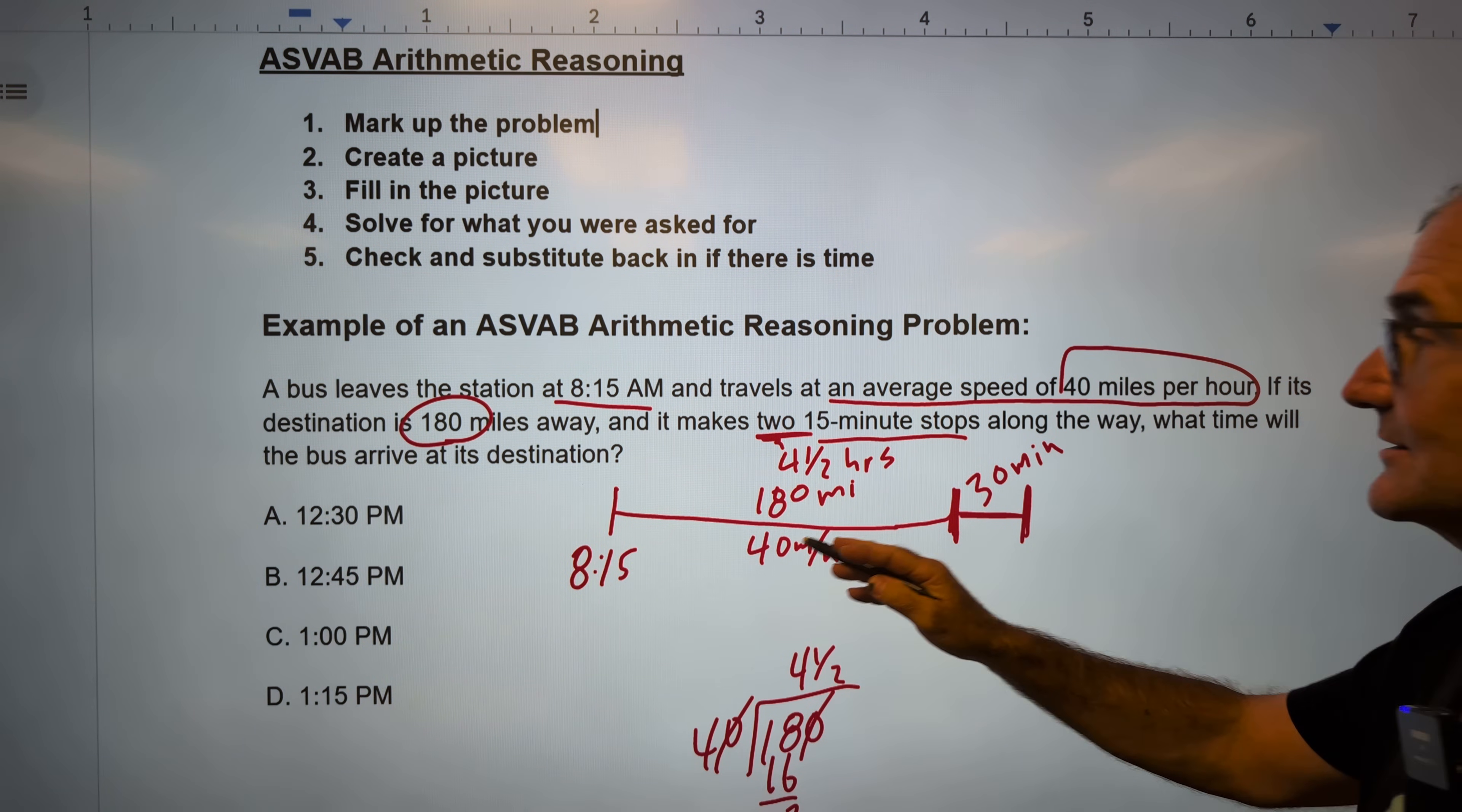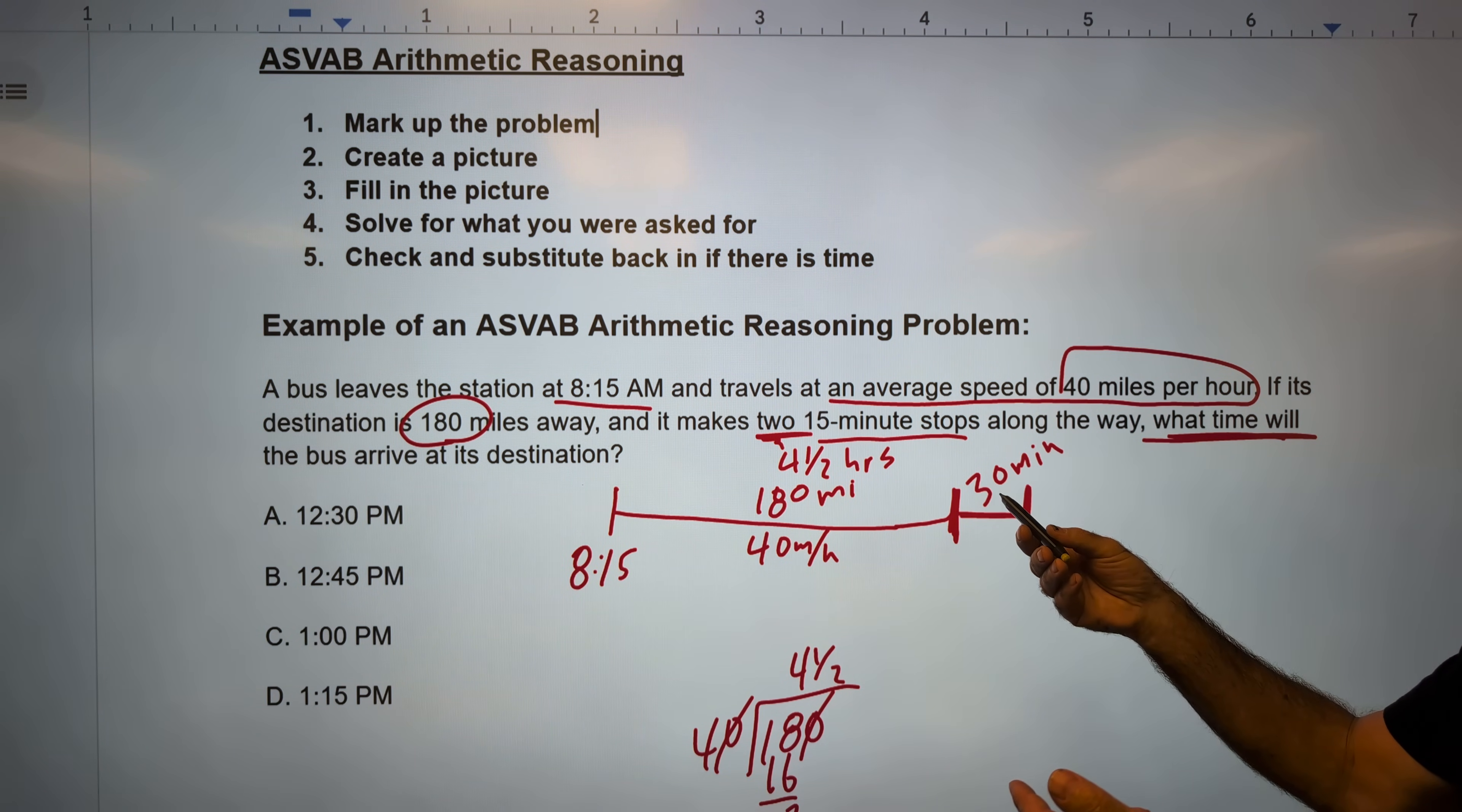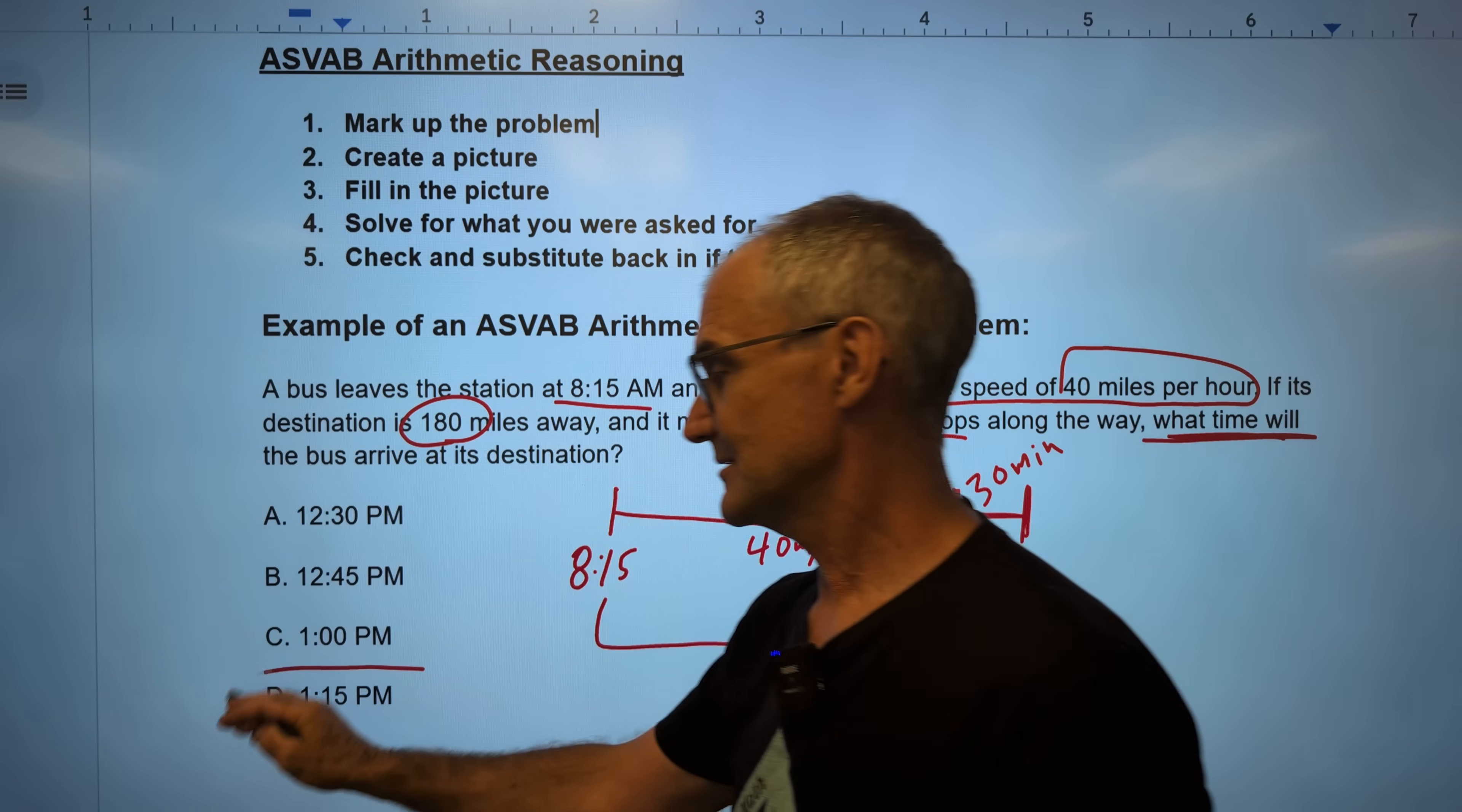No, I am looking at what time does the bus arrive? And I check my answers and I can see they're all times. So I need to figure out a time right here. So I marked up my problem. I created a picture. I filled in that picture. And now I'm looking for this time right here. I start at 8.15. I travel four and a half hours plus another 30 minutes, which is a half hour. So I go 8.15 plus four and a half and 30 plus five hours to end at a time right here. So 8.15 plus five hours is 13.15. Or, right, that's military time. 13.15. It is one hour and 15 beyond noon or 1.15 p.m. Correct answer, answer D.